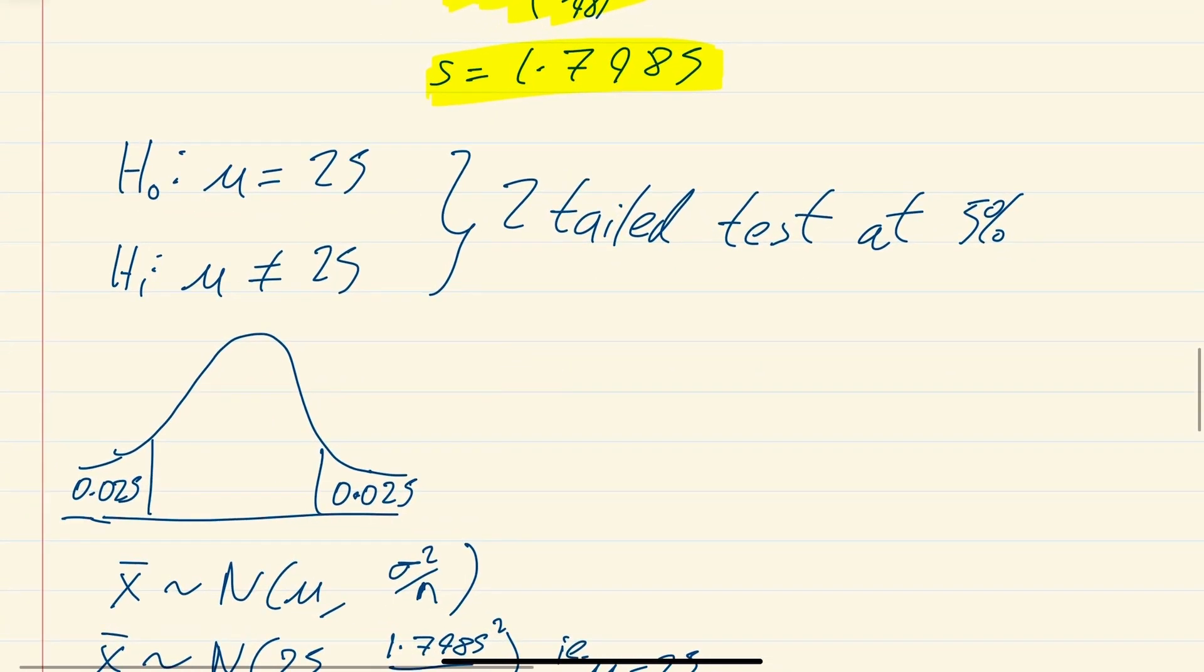Your null hypothesis H0 is that the default is just as true, so they had suggested it was 25. The magazine had suggested it was 25 and you're thinking, I don't think it is. So that's H1, your alternative hypothesis is the mean is not 25. So it's a two-tail test at 5%, which means 2.5% goes at one end and 2.5% goes at the other end. So that's why we've labeled those in decimal form, 0.025 at each end.